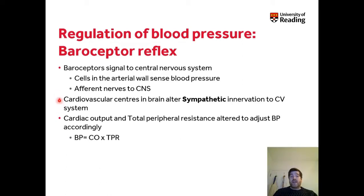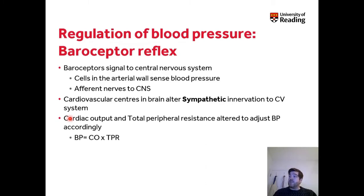Without going into too much detail, the cardiovascular centres in the brain alter the sympathetic innervation to the cardiovascular system. The arteries are largely innervated by the sympathetic nervous system and are partially contracted. So changing the amount that arteries contract — by either increasing or decreasing stimulation — can alter blood pressure.